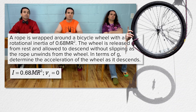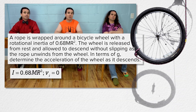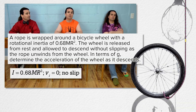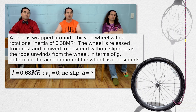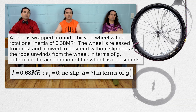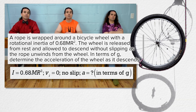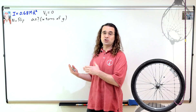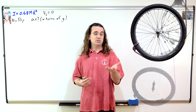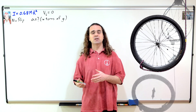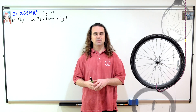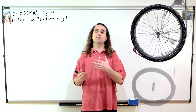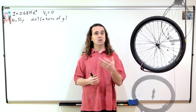The initial velocity of the wheel is zero. The rope does not slip relative to the wheel. Determine the acceleration of the wheel as it descends, in terms of little g, the acceleration due to gravity. In a previous lesson, we determined the rotational inertia of the bicycle wheel, which equals 0.68 times the mass of the wheel times the radius squared. Bobby, could you please begin solving the problem? Could you solve for the acceleration of the wheel in terms of g?